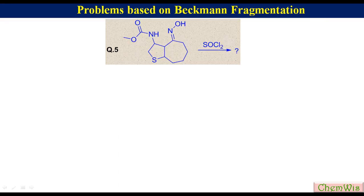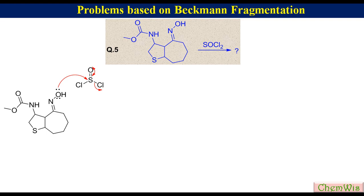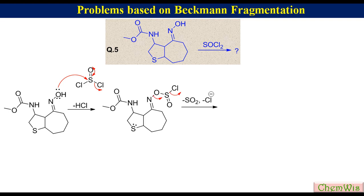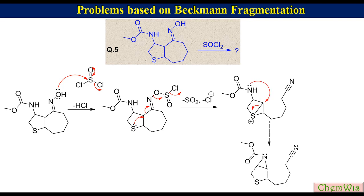Question 5: Predict the product of this reaction. In this substrate there is sulfur at the beta carbon. Sulfur can promote fragmentation even if it is present at the beta carbon. Reaction of the hydroxyl group of the oxime with thionyl chloride liberates HCl and gives rise to the sulfonyl chloride derivative. The leaving group departs as sulfur dioxide and chloride ion, and the C-C bond breaks, supported by sulfur, to produce a bicyclic cationic species. Intramolecular nucleophilic attack by the nitrogen leads to the formation of the bicyclic product.